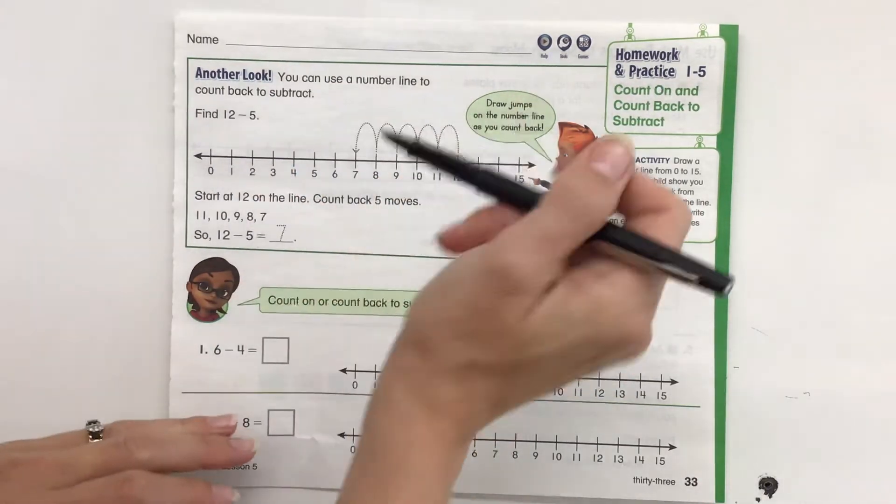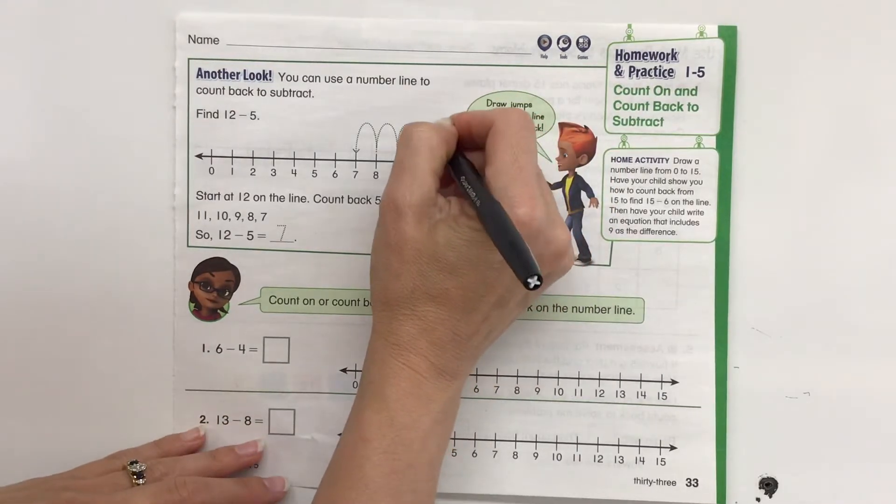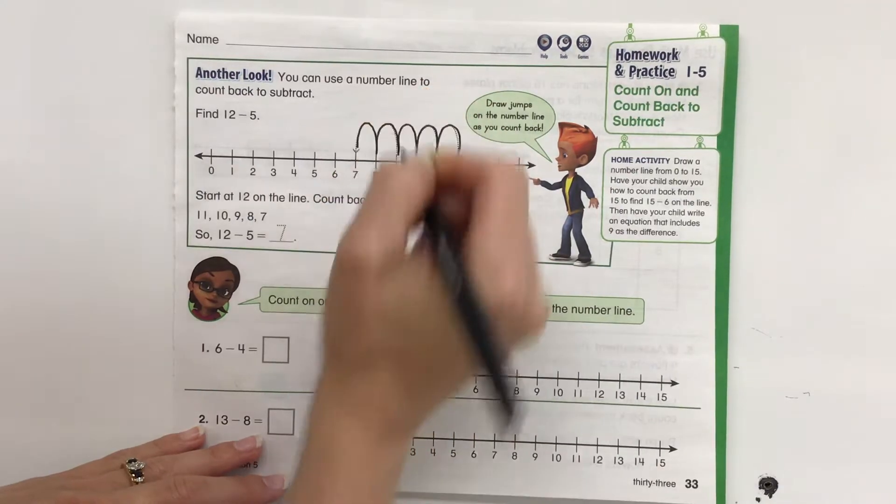Find 12 minus 5. So we start here at 12, and we're subtracting 5 or going back 5 hops. 1, 2, 3, 4, 5.